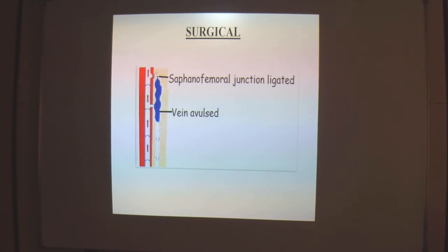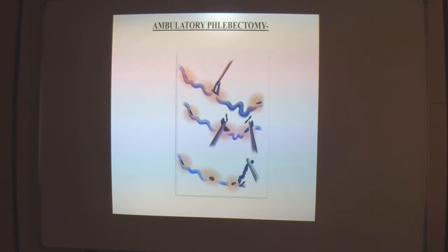Surgical methods include the stripping operation or Trendelenburg's operation, which is now less commonly performed. In this operation, saphenous-femoral valve incompetency is addressed — the great saphenous vein is detached from the femoral vein at its point of entry, and tributaries in the groin are ligated separately. Ambulatory phlebectomy is another method used to remove smaller varicose veins near the surface of the legs through a series of skin punctures under local anesthesia using a phlebectomy hook. After treatment, compression bandages and compression stockings are worn for one to two weeks.